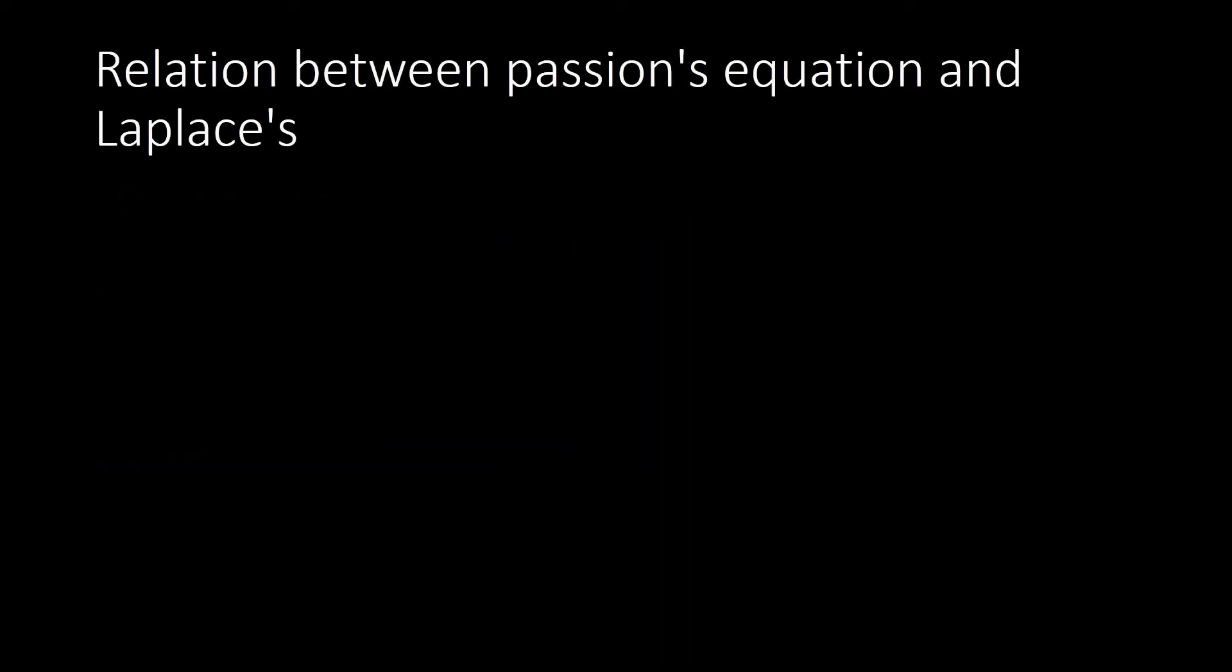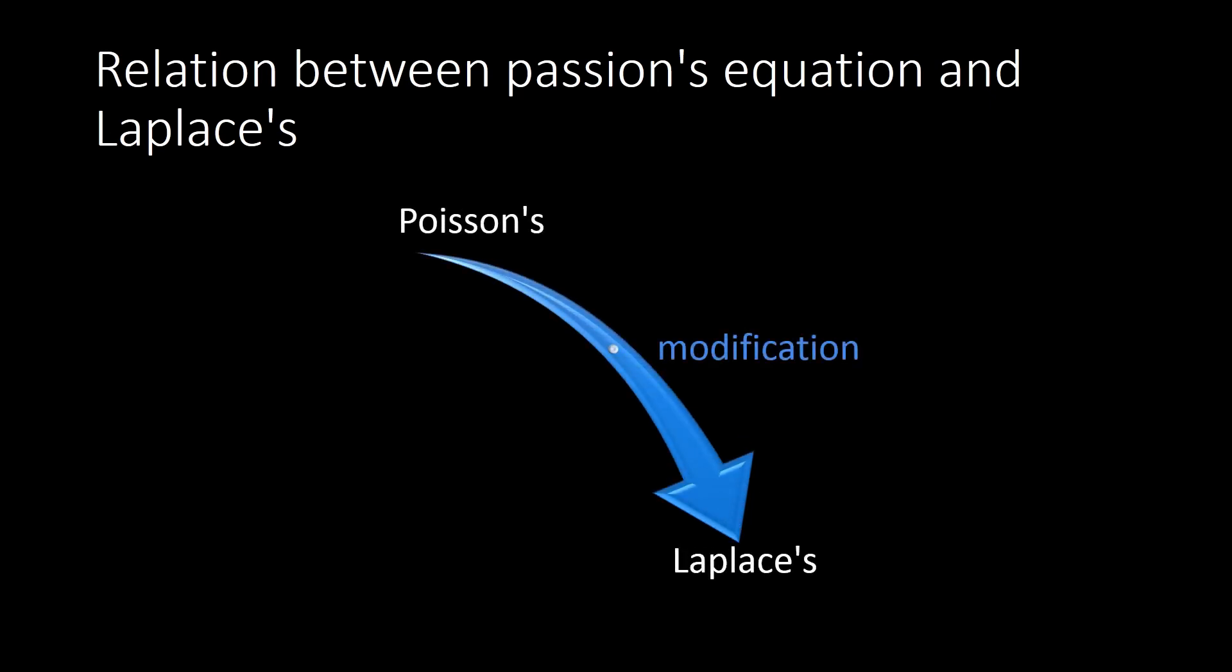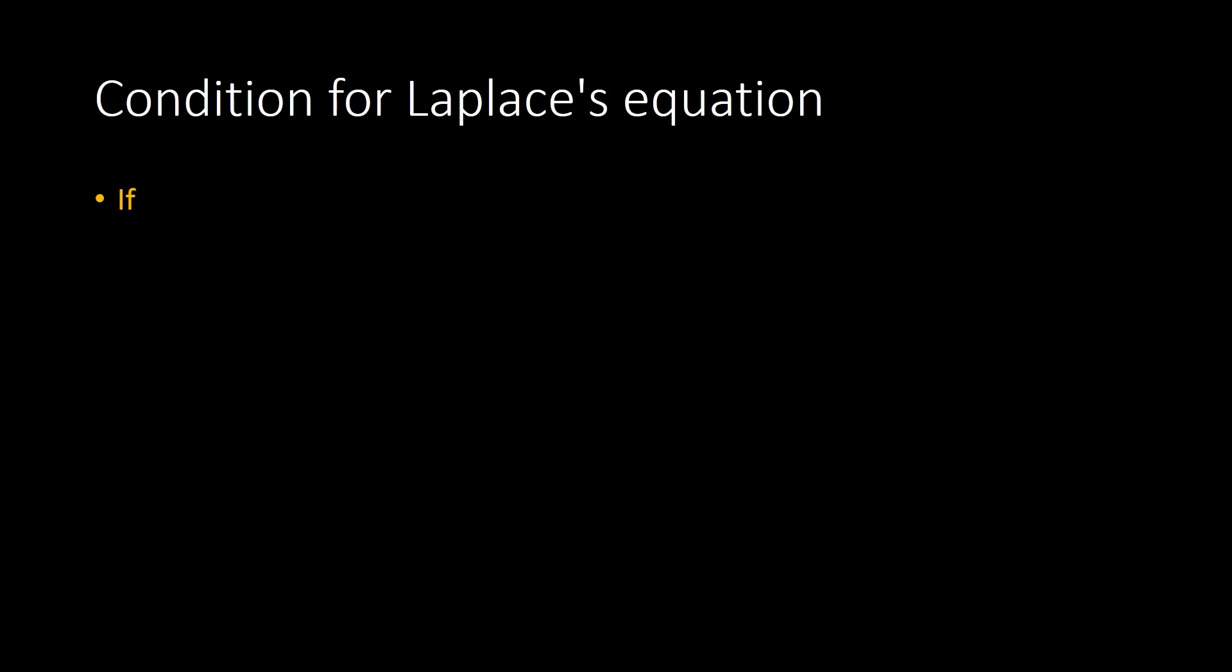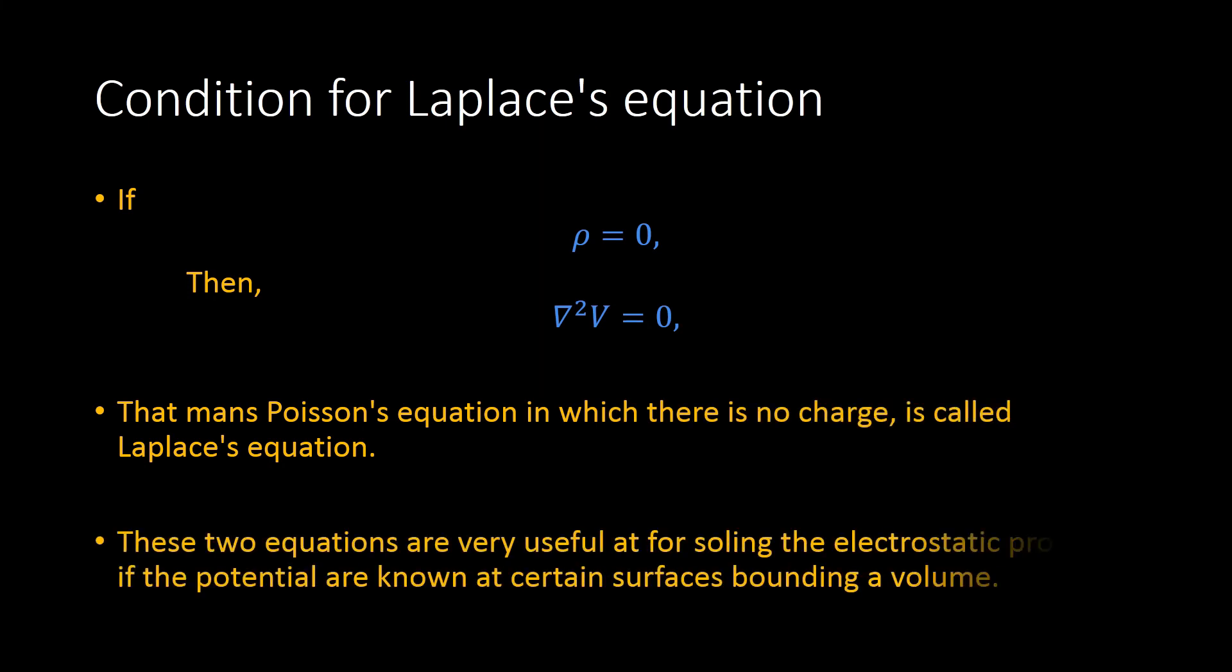Now let's talk about the Laplace equation. Laplace equation is actually a modification of Poisson equation where the value of rho is zero, which means del square V equals zero. That means the Poisson equation in which there is no charge is called Laplace equation.